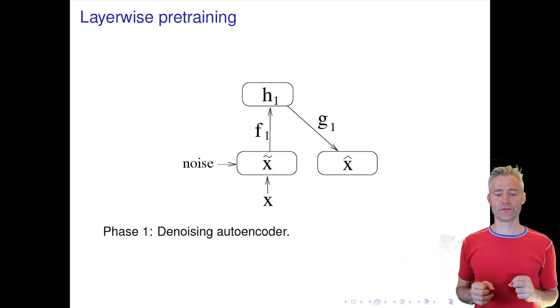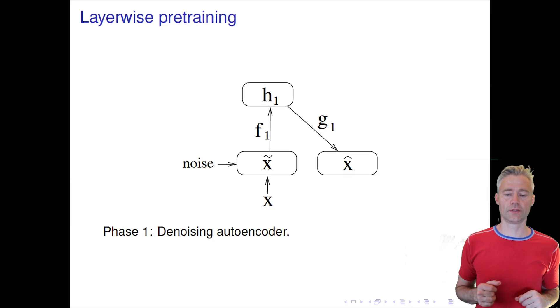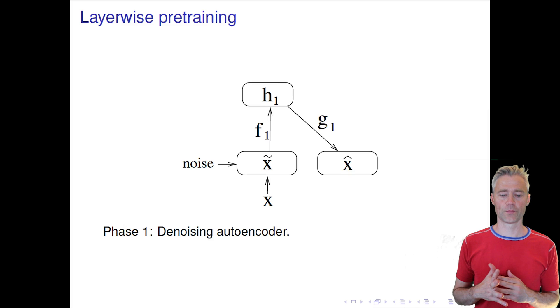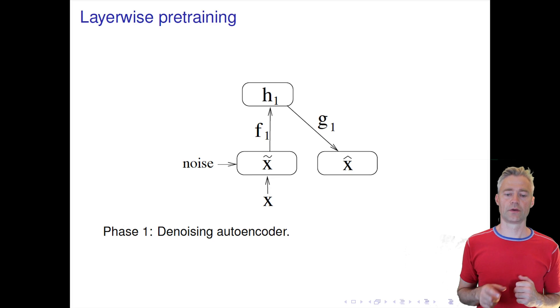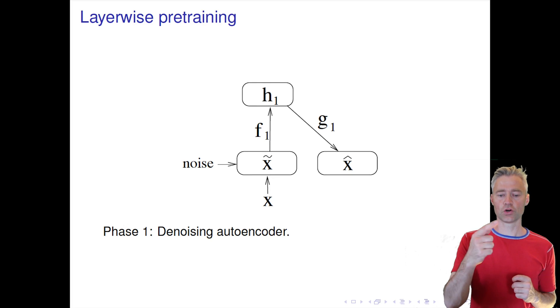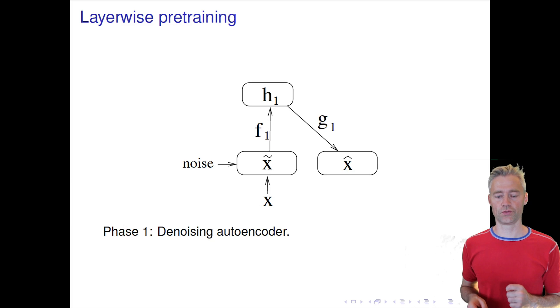We apply the denoising autoencoder in several steps, so here first we can see our denoising autoencoder from before. We train it and that means now we get an F1 and a G1 mapping, an encoder F and a decoder G.